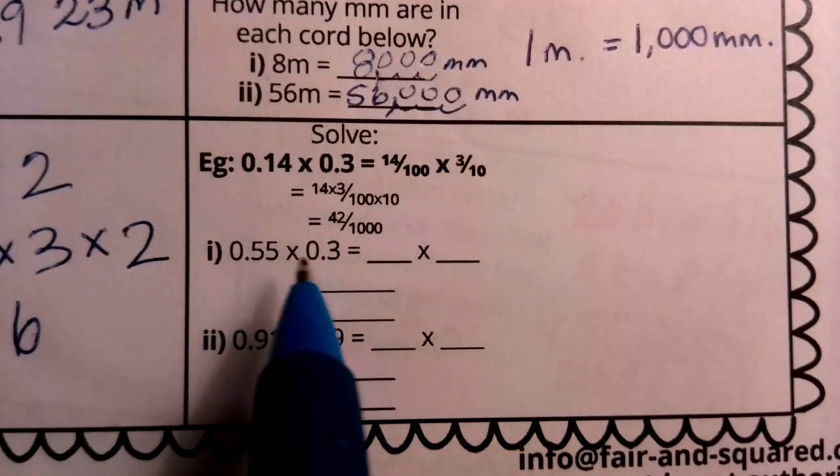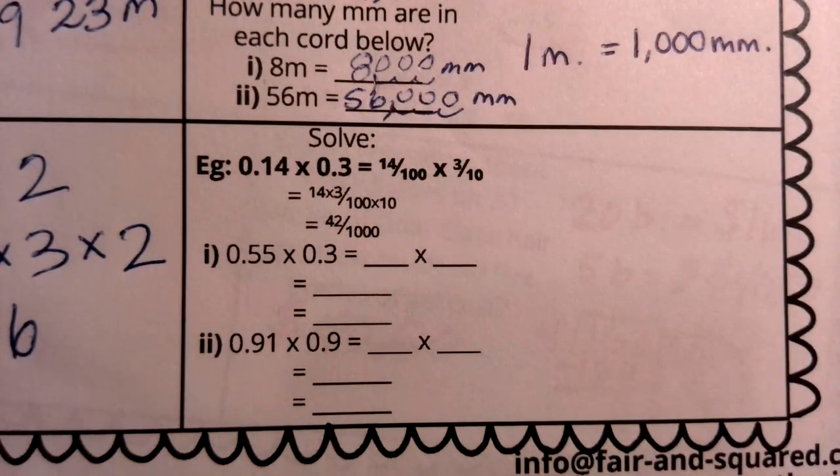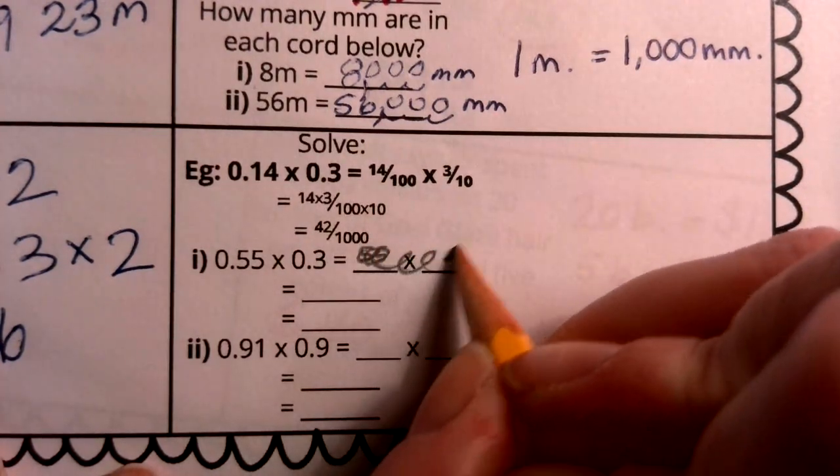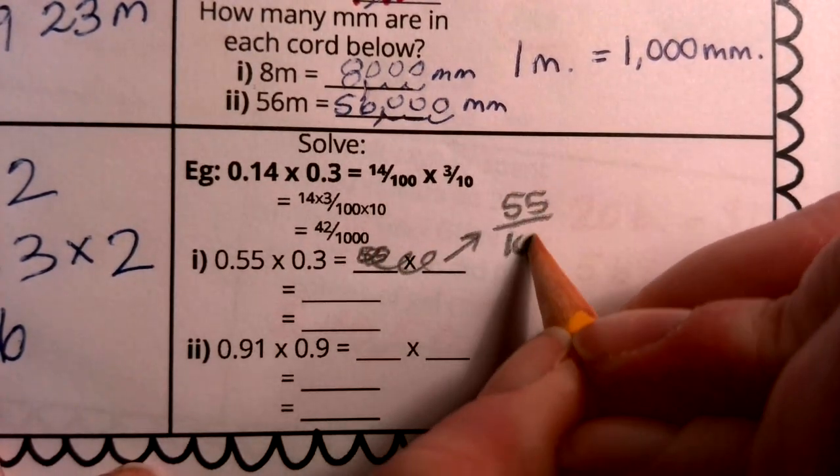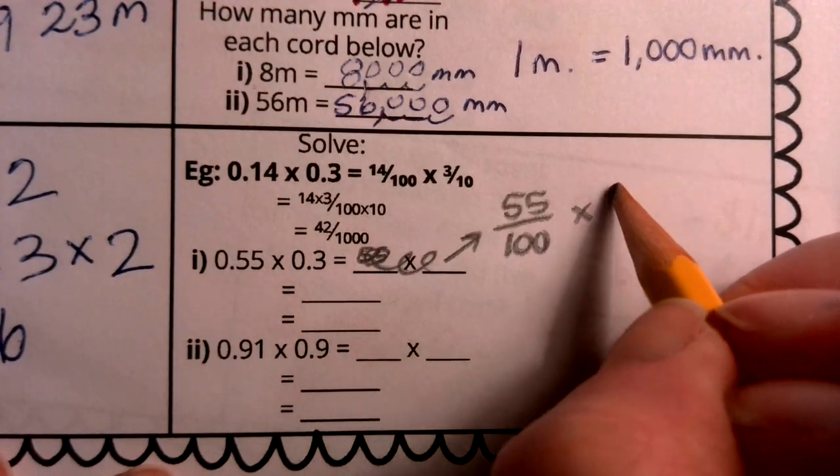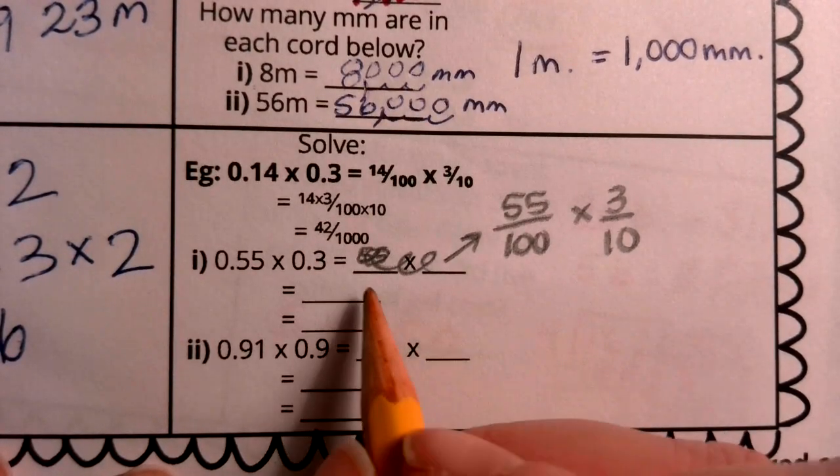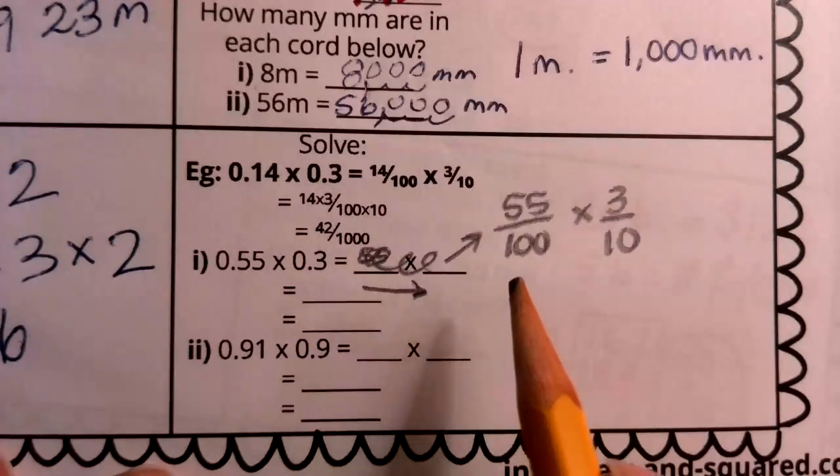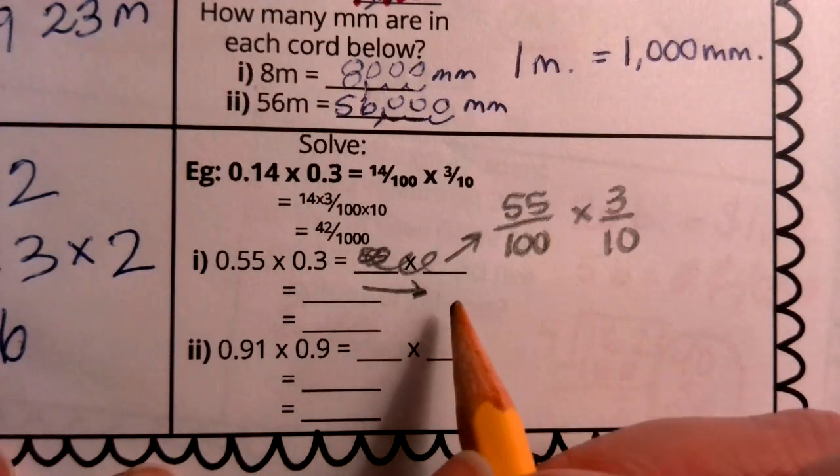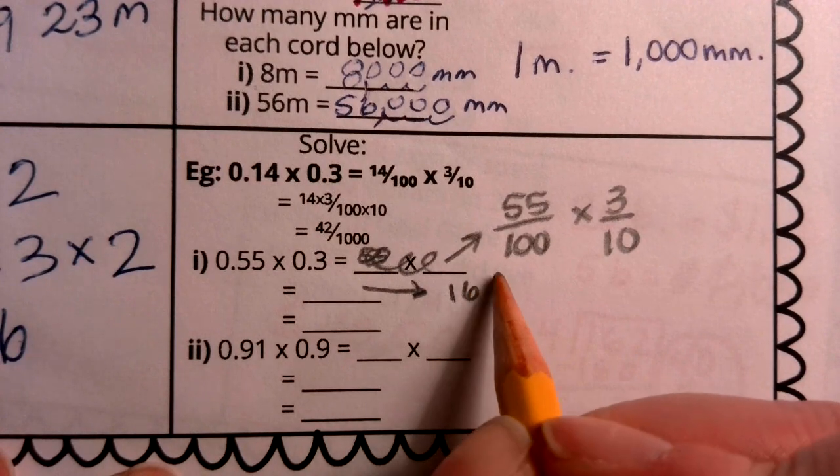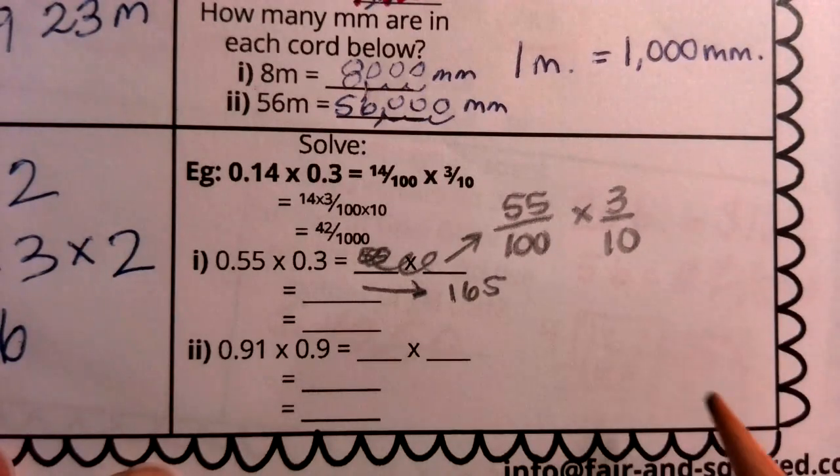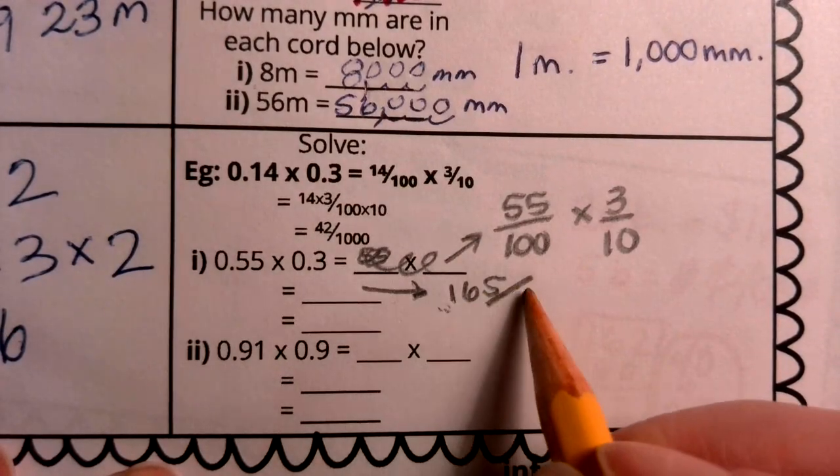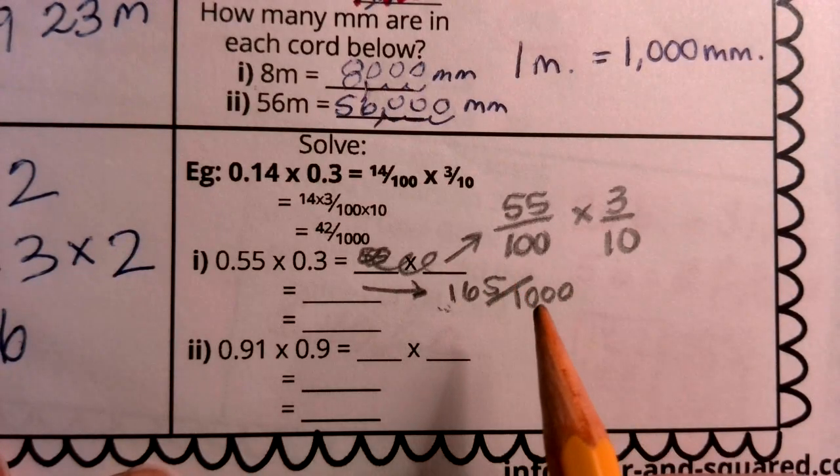So now, boys and girls, we're going to have 0.55 times 0.3. But I can also write that out. We've got 55 hundredths, and we're going to multiply that by three tenths. Now, that is going to equal 55 times 3. What would that be? Well, three times 5 is 15. Three times 50 is 150. So here, when I combine those values, we're going to have 165. If you can follow that 55 times 3 in your head, that's great. Otherwise, please feel free to come to the side and do a little scrap work. But sure enough, we should get to that answer. Now, 100 times 10 is like a 100 with an extra zero. So it's 1,000. 165 over 1,000.